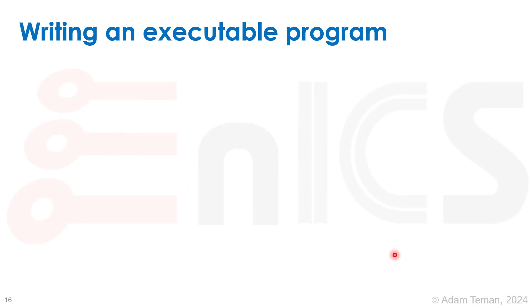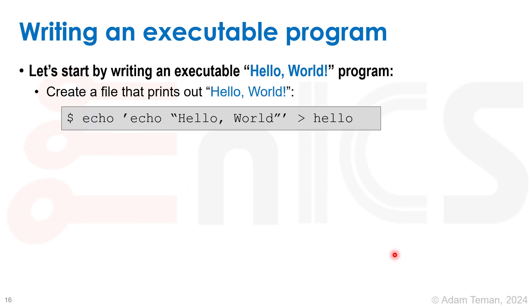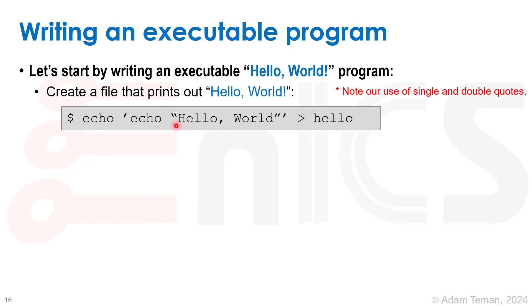We're now at the point where we can write a very simple executable program. Let's start with a hello world. We're going to create a file that prints out hello world. We're going to do echo — echo hello world. We use single quotes here. We want to print echo double quotes hello world into the file hello by redirecting it. This will create a file called hello which has echo hello world inside of it.